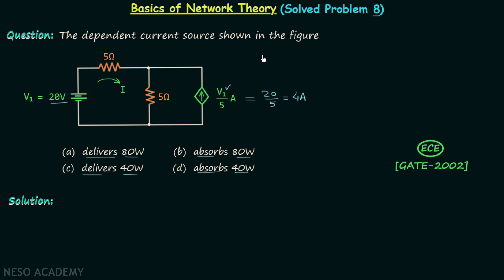We know power is equal to voltage multiplied by current. We know the current is 4 amperes, but we don't know the voltage across the dependent current source.